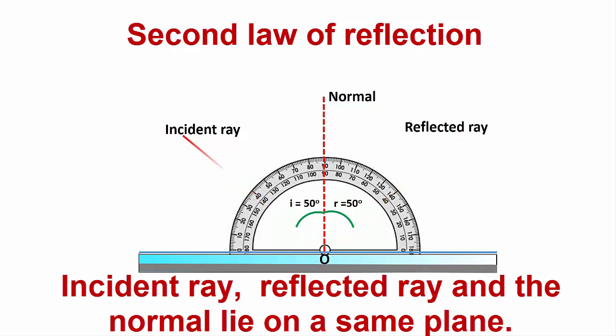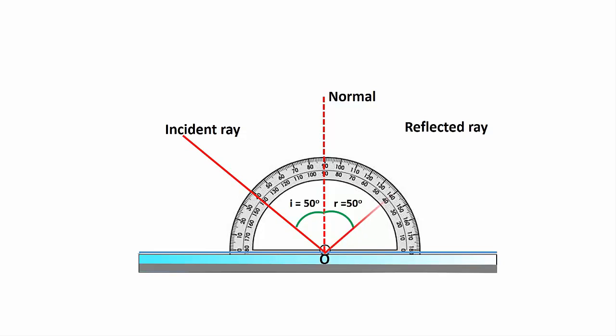So, we can say incident ray, reflected ray, and the normal at the point of incidence lie in the same plane. We call this the second law of reflection.